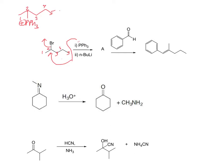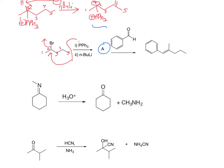If you treat this with a strong base like n-butyl lithium, that n-butyl lithium is going to remove the most acidic proton — the one right next to the positive charge. When that happens you'll end up with a negative charge right there on C1, with PPh3 still attached. That gives you your ylide, which is compound A.